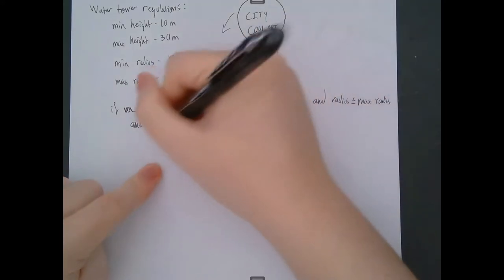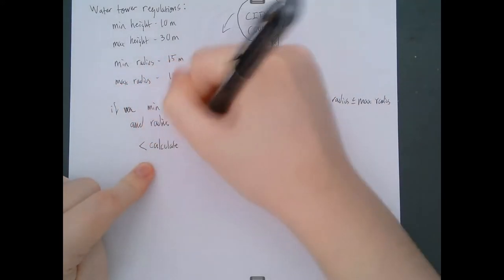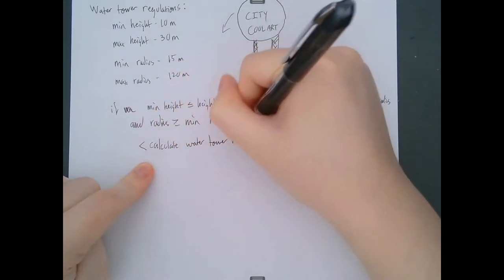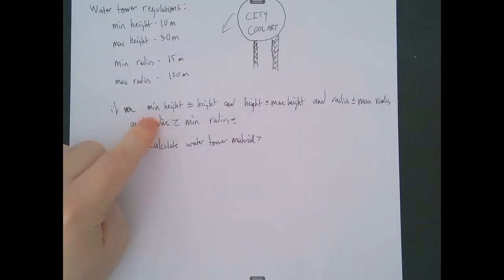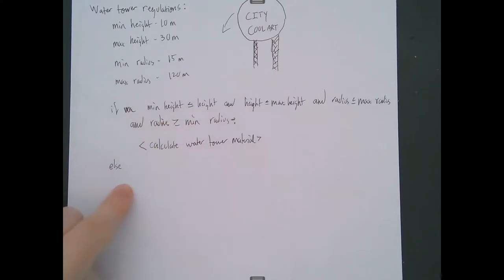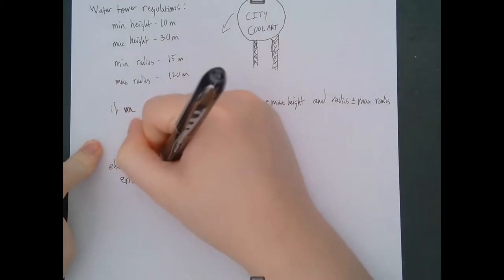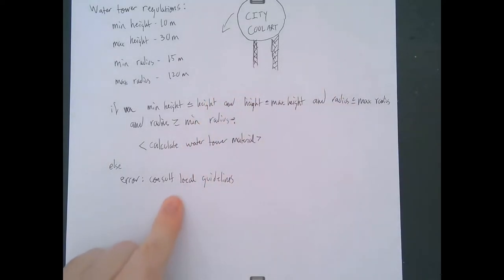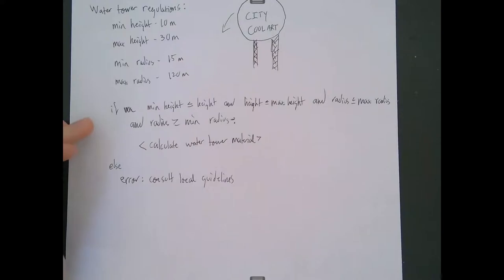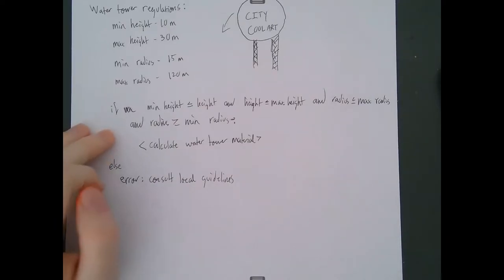So if all of these conditions are true, then we can start doing our calculations — calculate water tower material. And then as part of another condition, else if at least one of these conditions is not met, we can display an error saying 'consult local guidelines' and include messaging about what the min height, max height, min radius, and max radius are. This is one example of how conditional statements can be really useful: checking that certain parameters are valid or ensuring only certain parts of a code block actually execute.